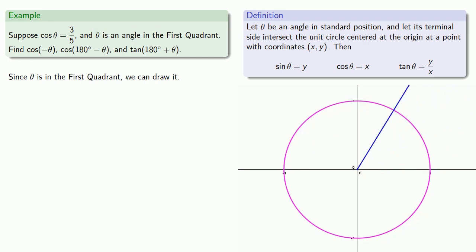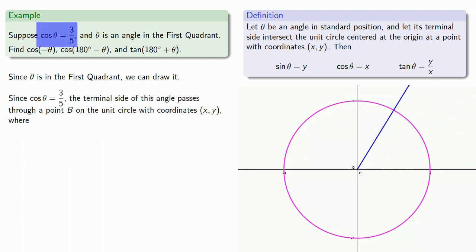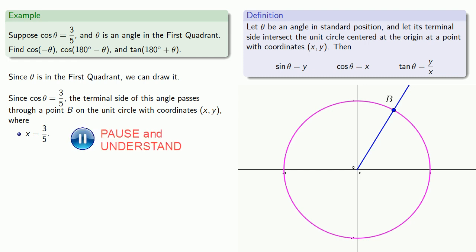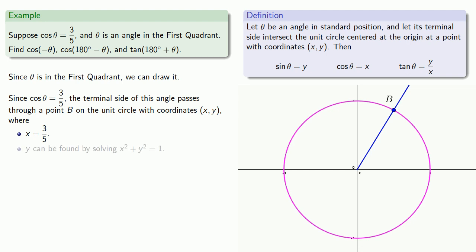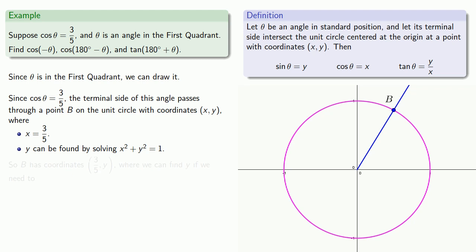Since the cosine is 3/5, the terminal side of this angle passes through a point p on the unit circle with coordinates (x, y), where x is 3/5. And y can be found by solving x² + y² = 1. So p has coordinates (3/5, y), where we can find y if we need to.